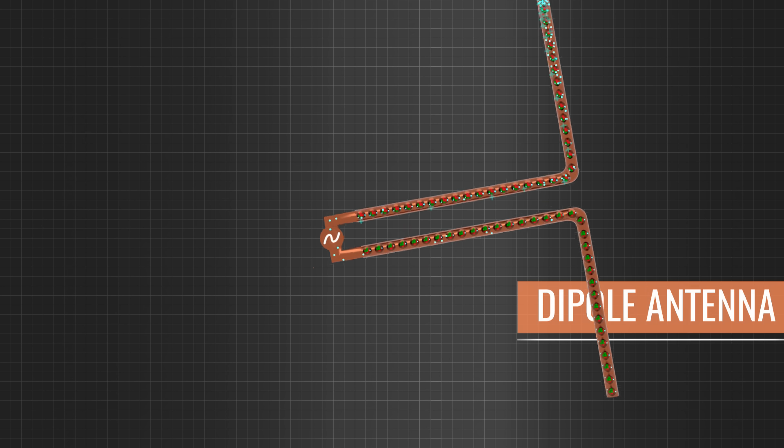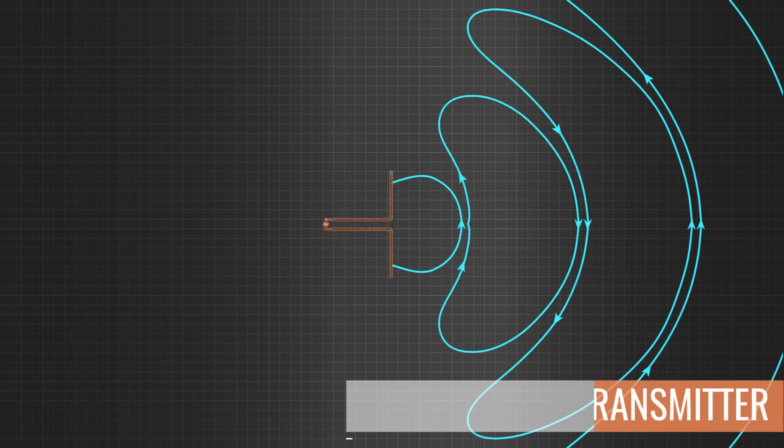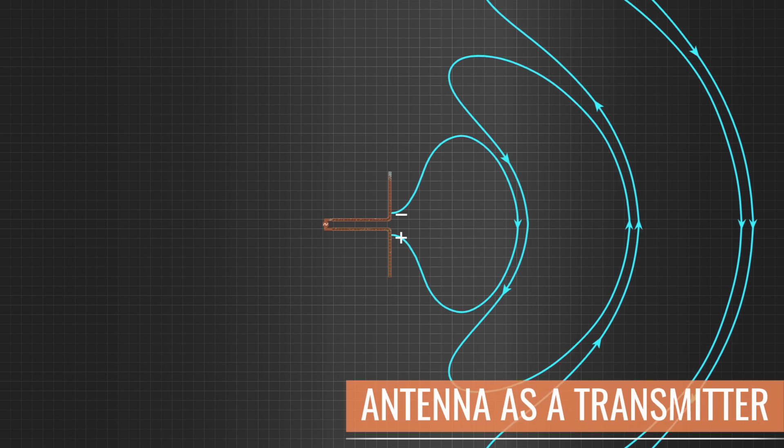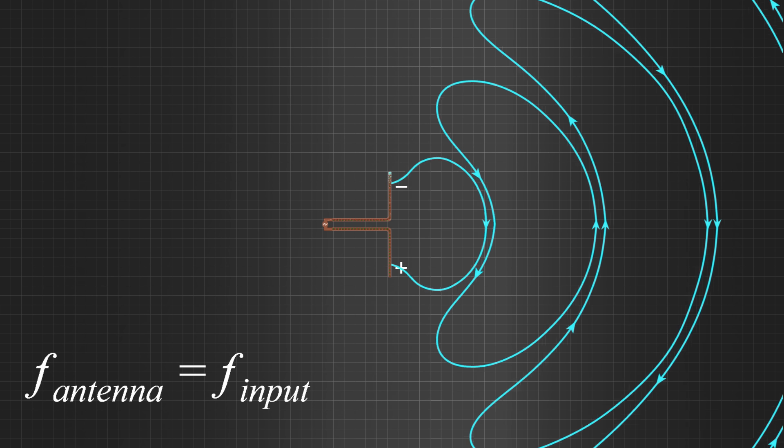The dipole antenna produces the same radiation as we saw in the previous section. In this case, the antenna works as a transmitter. The frequency of the transmitted signal will be the same as the frequency of the applied voltage signal.